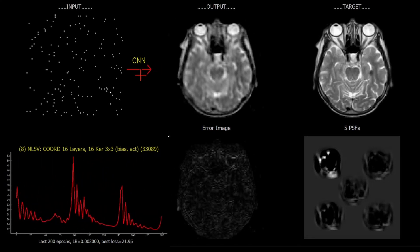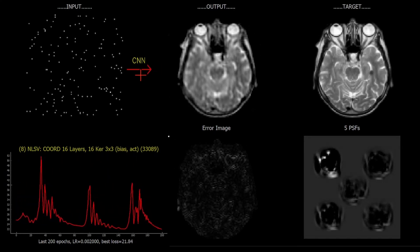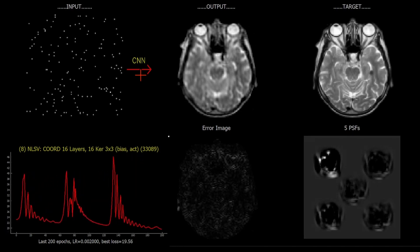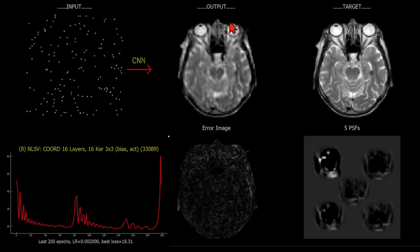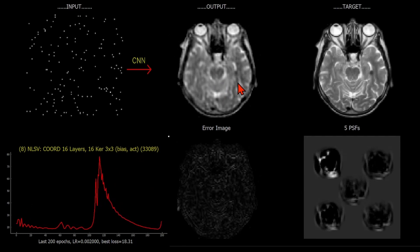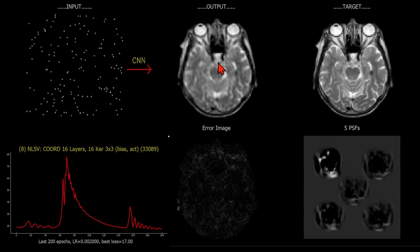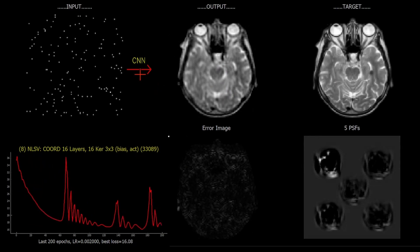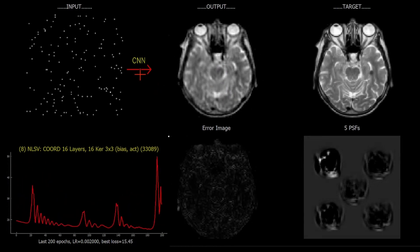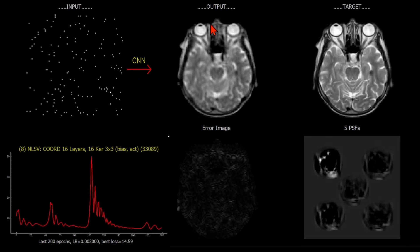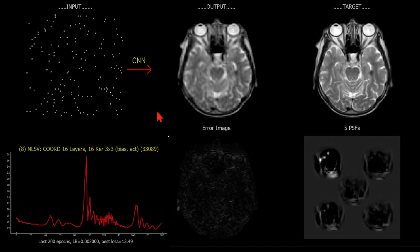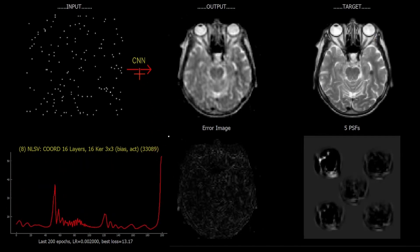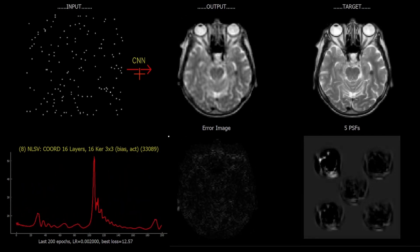Just to show a bit more of the flexibility of these methods, I could change the input. Obviously I could leave this to run to get lower and lower loss, and it will end up matching the target very well. This is only one training pair - one input, one target - so with this many parameters, it's very easy to be able to match the target.